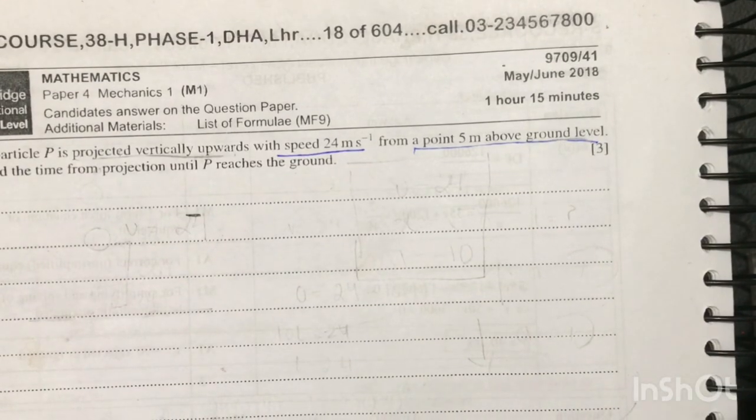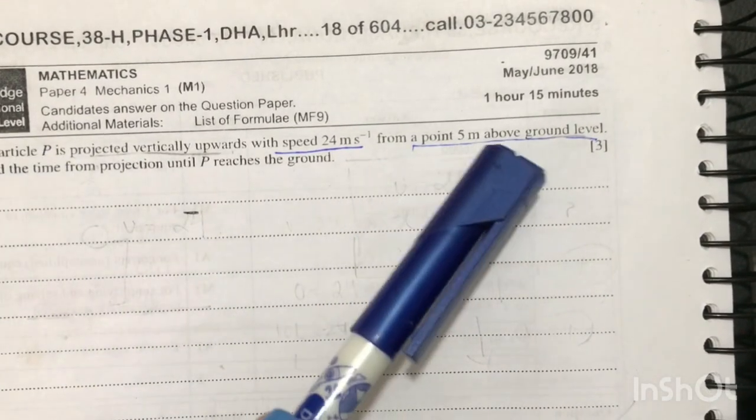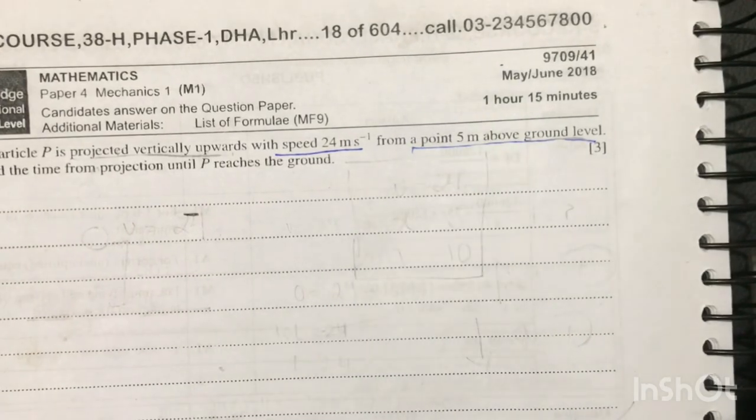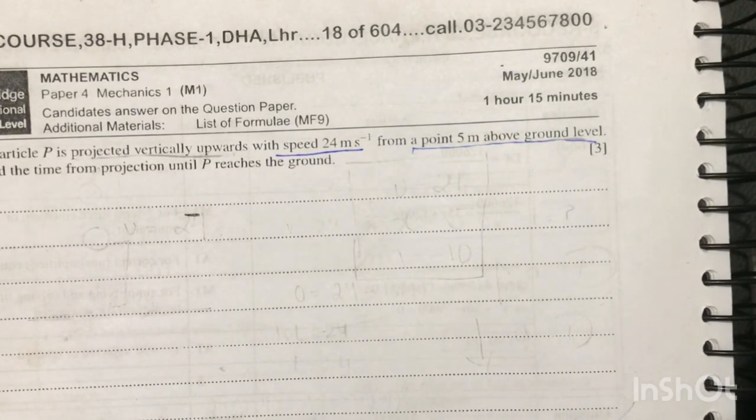Hello guys, so today I will be solving 9709 May/June 2018. This is the A-levels Mechanics paper. We have seven questions in this paper and one hour 15 minutes, so let's get started with the first question.